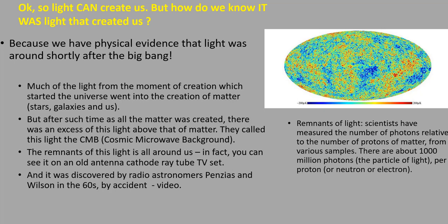Okay, so light can create us, but how do we know it was light that created us? Answer: because we have physical evidence that light was around shortly after the Big Bang. Much of the light from the moment of creation which started the universe went into the creation of matter, stars, galaxies, and us.